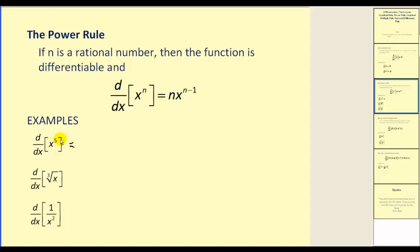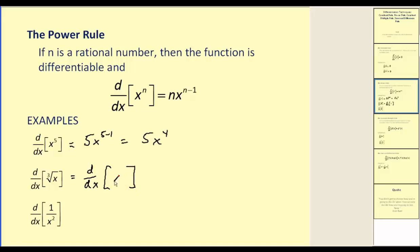The derivative of x to the power of five: five will be the coefficient and the new exponent will be five minus one. So our derivative will be five x to the power of four. These next two examples do not fit the form of this formula, so we're going to have to rewrite them so that they do. We have to recognize that the cube root of x is the same as x to the one-third power. So our derivative would be one-third x to the one-third minus one, which would be one-third x to the power of negative two-thirds.